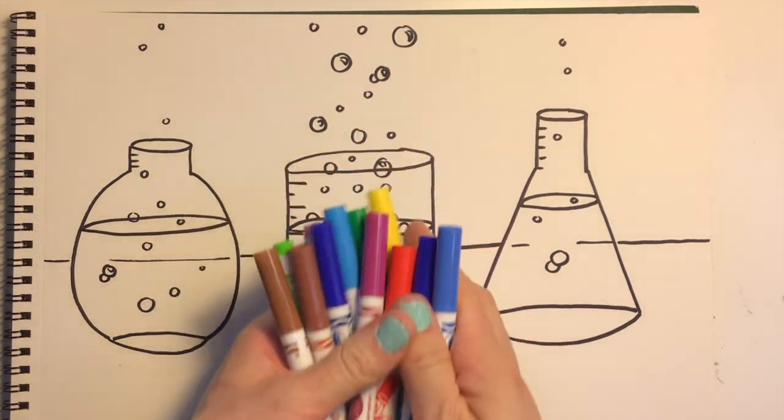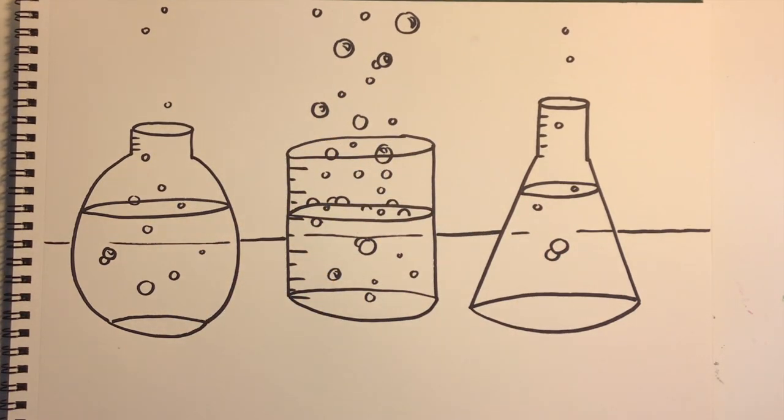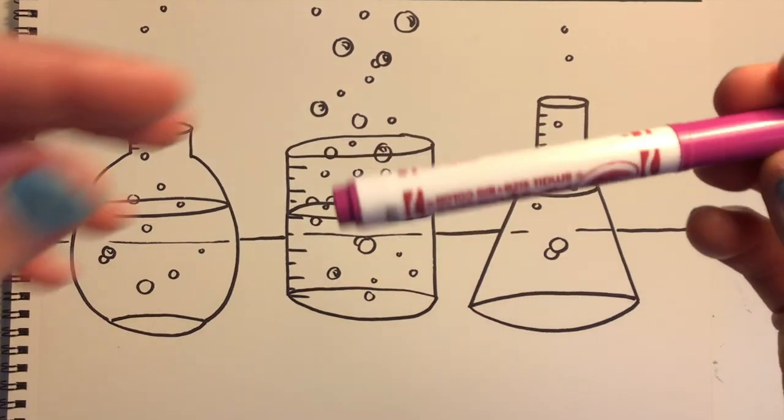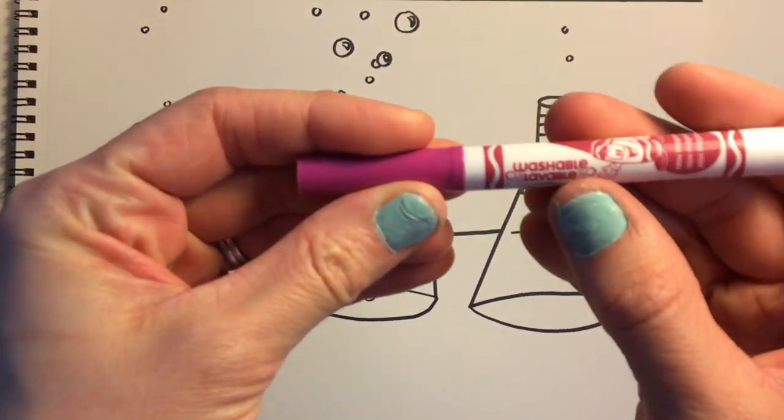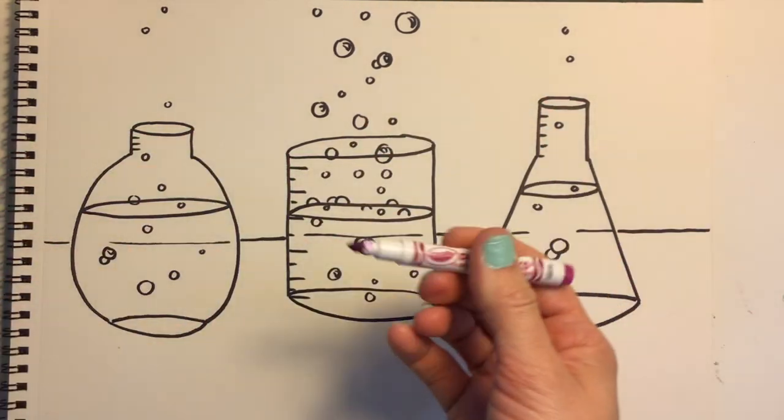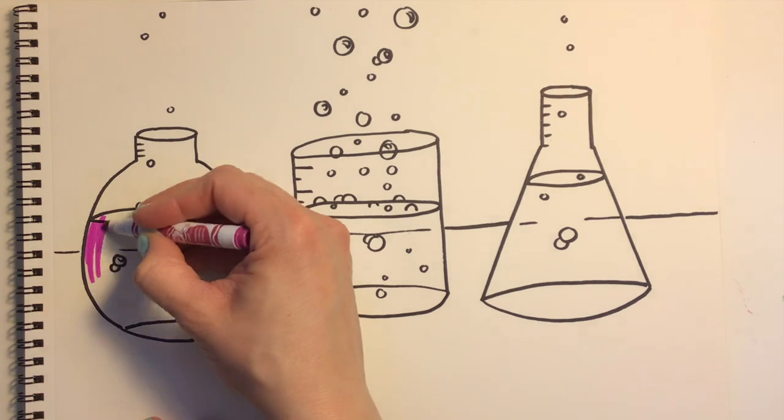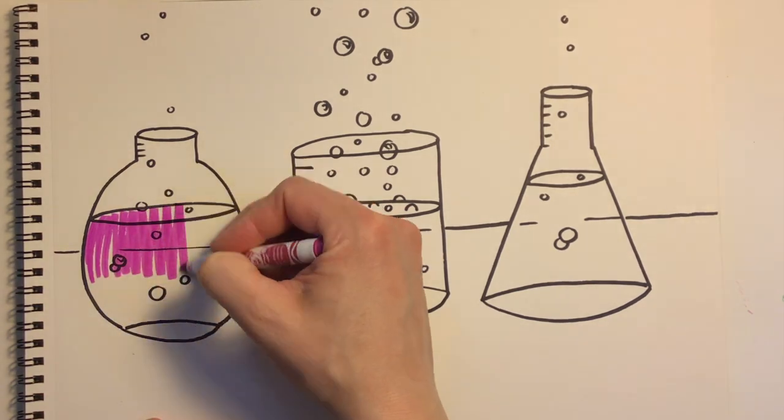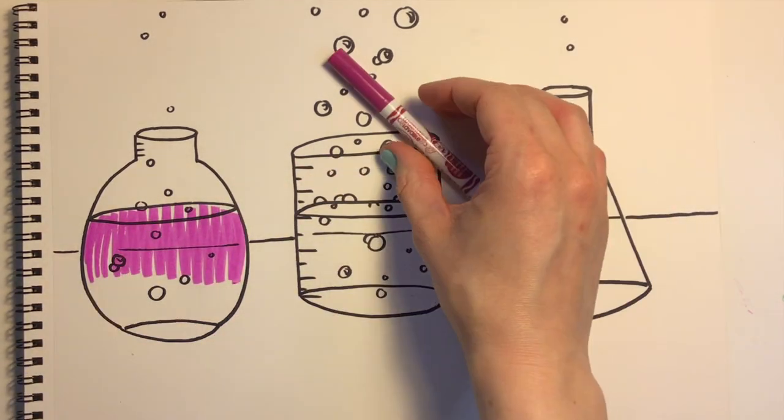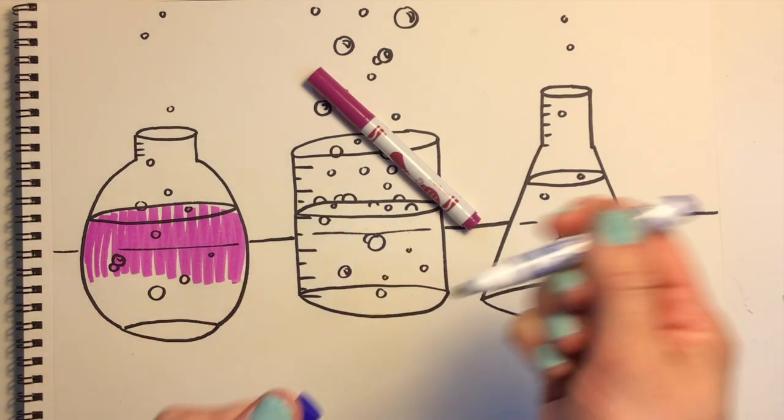Now it's time to add color to our beakers. If you don't have paint, grab some markers. Just make sure they say washable on the label. Washable markers can be easily turned into paint with just some water. I want my beakers to look like a colorful chemical mixture happened, so I'm going to color one half with one color and the bottom half with another.